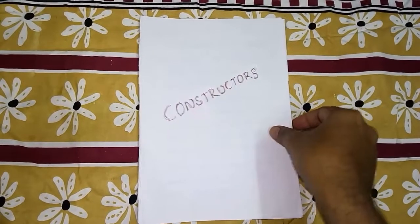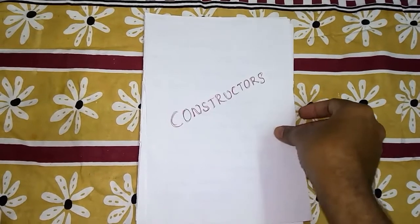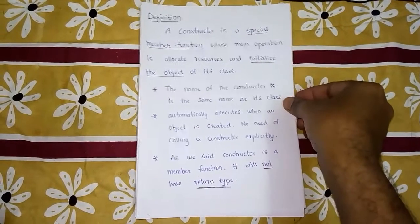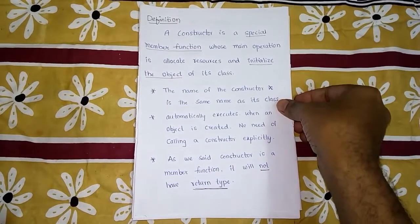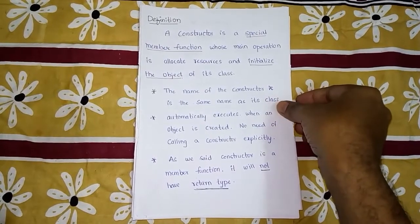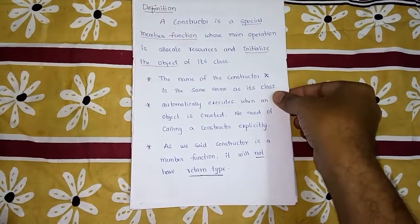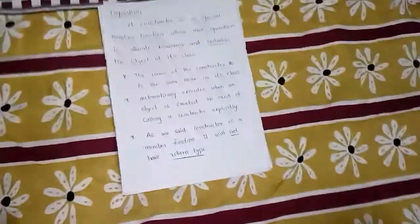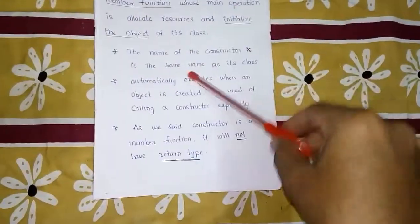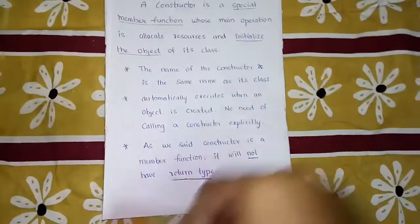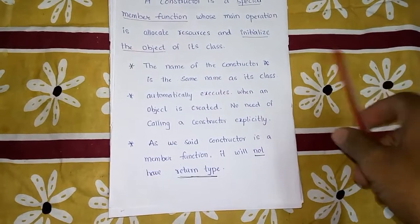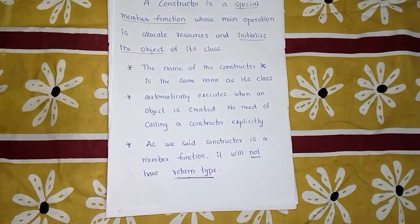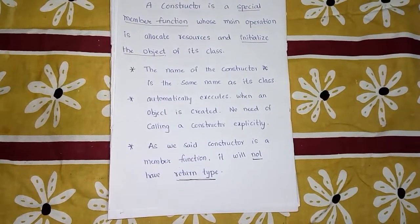Today we will discuss the topic on constructors. A constructor is a special member function whose main operation is to initialize the object whenever it has been created. The difference between a member function and a constructor is that the constructor has the same name as its class, and it automatically executes when an object is created — there is no need to call a constructor explicitly.